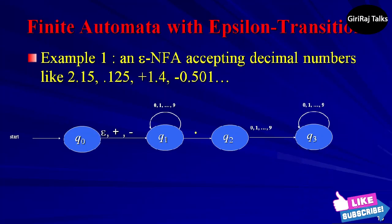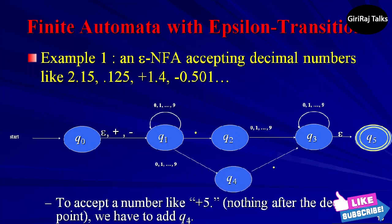Let us take one example: an epsilon-NFA that accepts decimal numbers consisting of an optional plus or minus sign, a string of digits, a decimal point, and another string of digits. Either this string of digits or the other can be empty, but at least one of the two strings of digits must be non-empty.